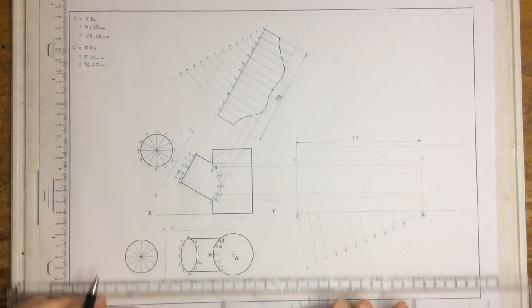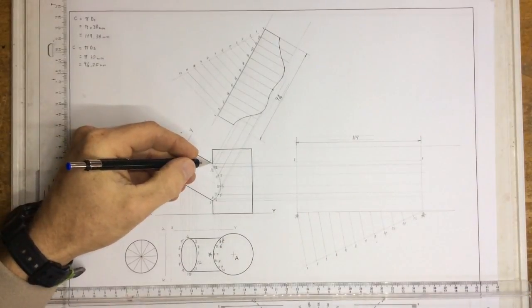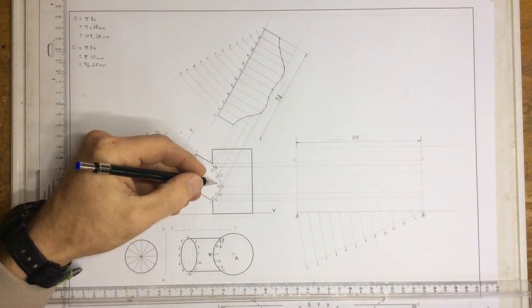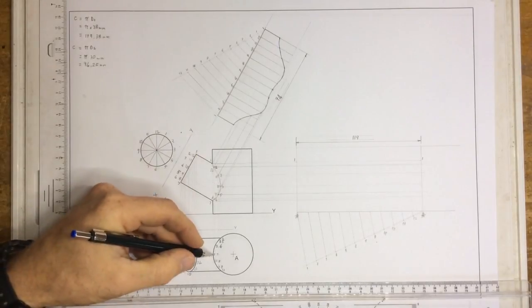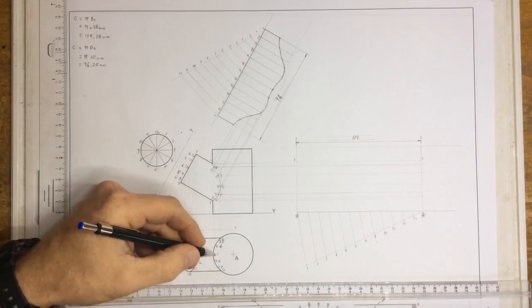After I've done that, I'm going to label all of these points: 1, 2, 3, 4, 5, 6, 7, 8, 9, 10, 11, 12. And over here, same story: 1, 2, 3, 4, 5, 6, 7, 8, 9, 10, 11, 12.